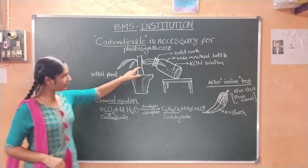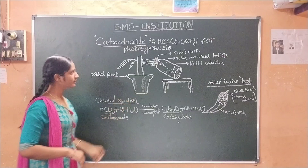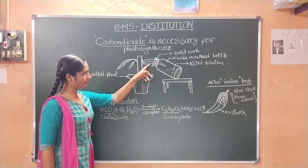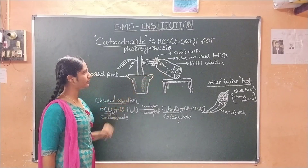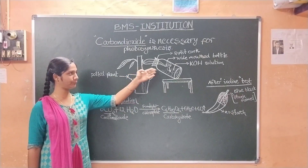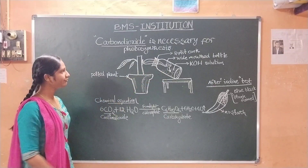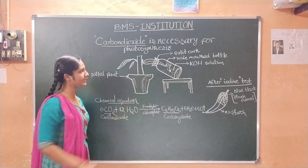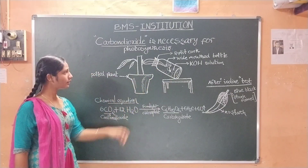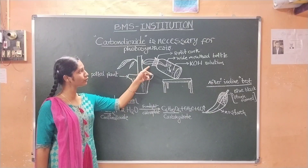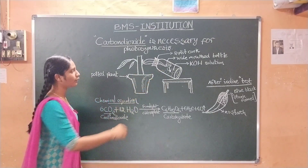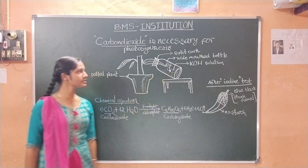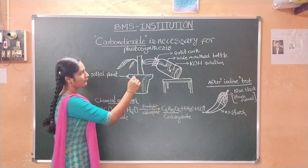Now we have to select one of the leaves from this potted plant. I have selected this leaf and inserted it into this wide-mouthed bottle. We have to select a long leaf to put into the bottle. Before that, we have to pour some amount of KOH solution into the bottle. Then we place the leaf carefully, keeping only 50% of the leaf inside. After this, we fill the mouth with the help of a split cork.